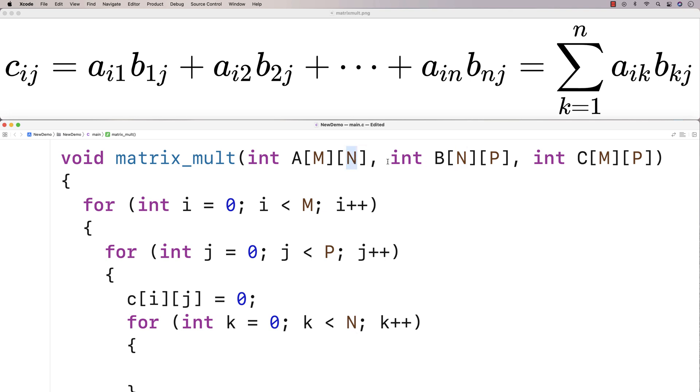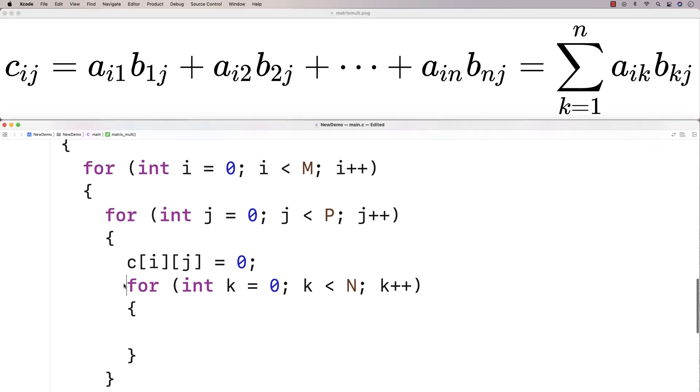A has n columns, B has n rows. And this is that sequence of multiplications here from 1 to n that we're going to do using this loop here.